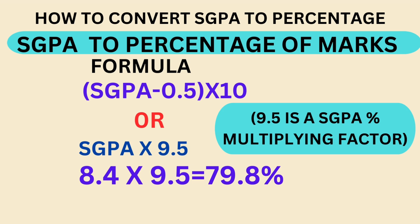Now on screen you can see how to convert SGPA to percentage. For converting SGPA to percentage of marks we have a formula. The formula is SGPA minus 0.5 into 10, or simply you can apply another formula: SGPA into 9.5. This 9.5 is the SGPA percentage multiplying factor.